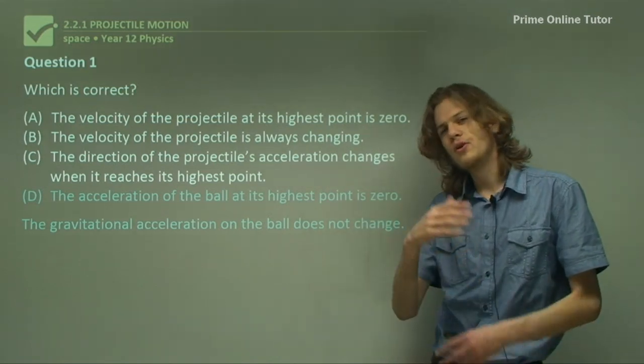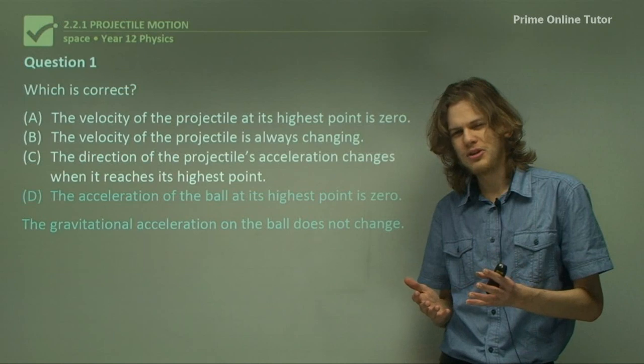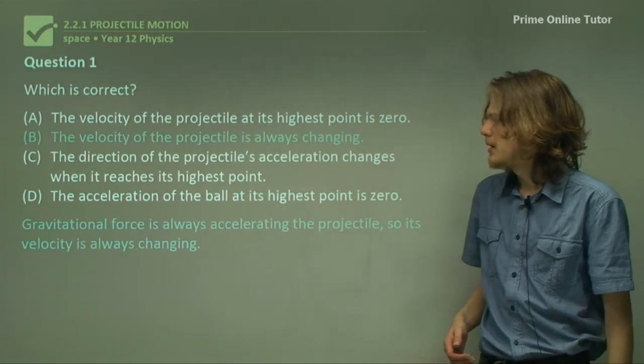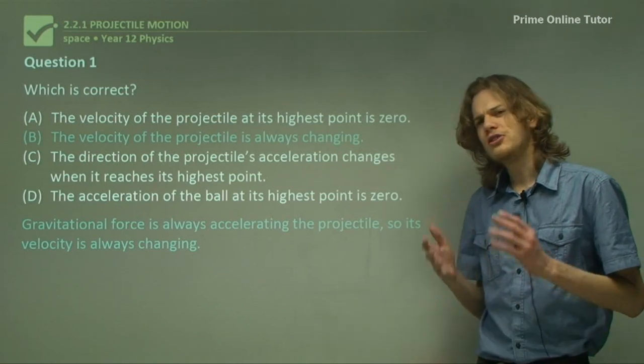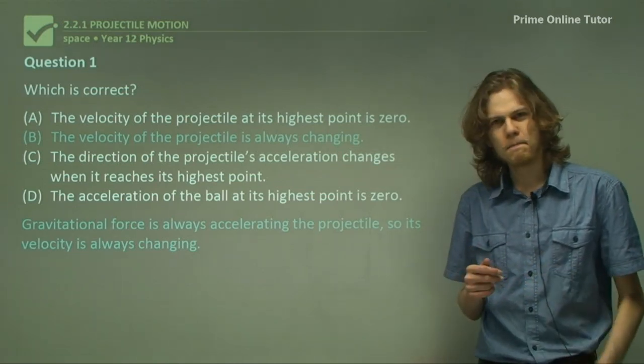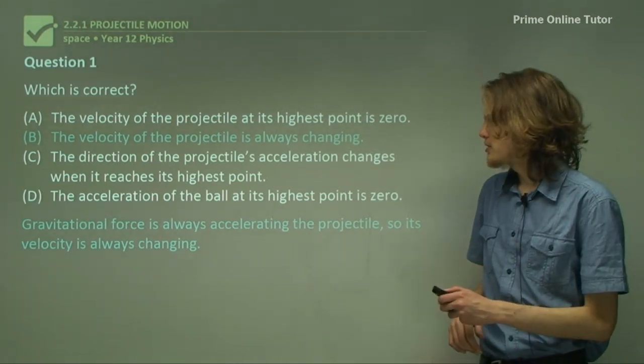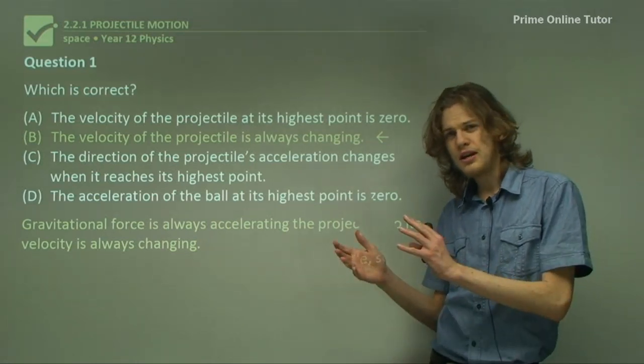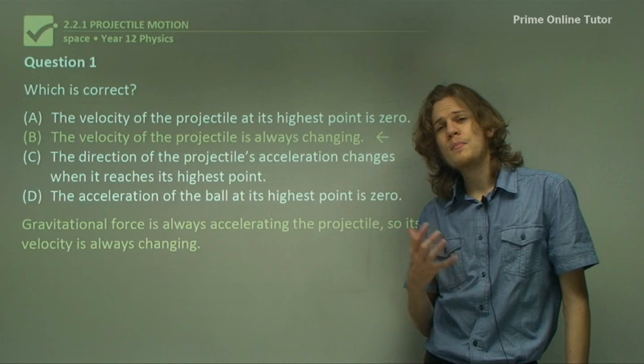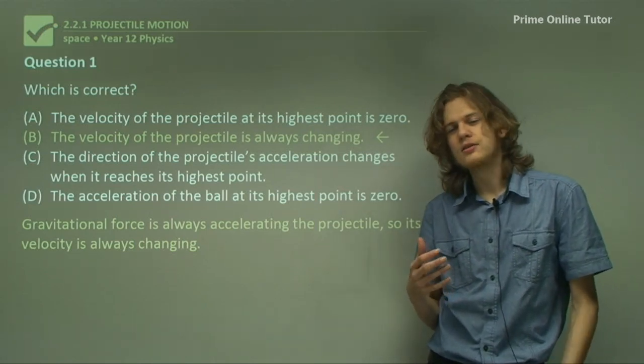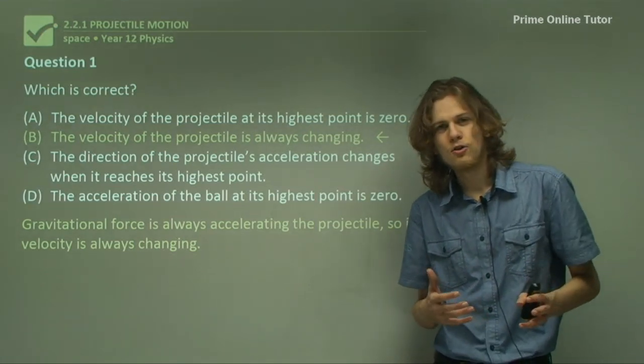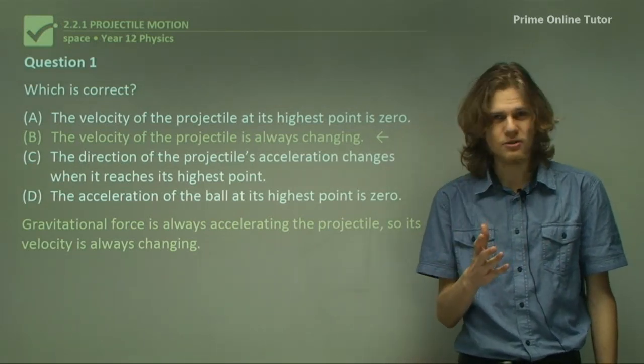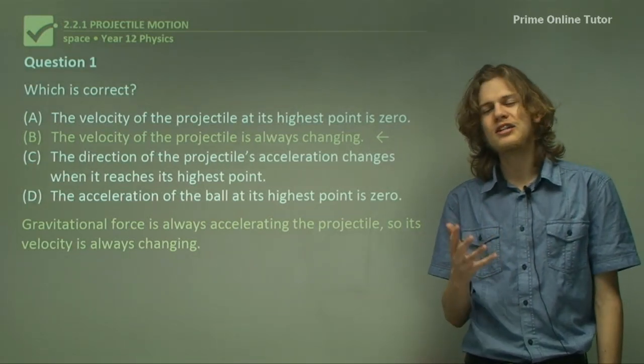The vertical component of velocity might reach 0, but our correct answer for this question is in fact B, the velocity of the projectile is always changing. The reason for this is that both the direction is always changing as it moves in an arc, and the magnitude is always changing as gravity is affecting it. Remember as long as we have an acceleration, in this case constant gravitational acceleration, we will have a changing velocity.